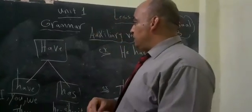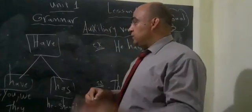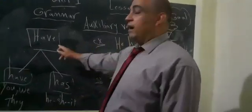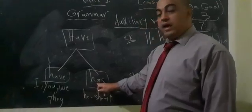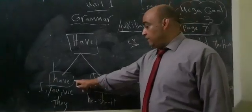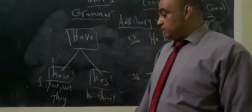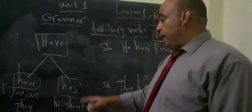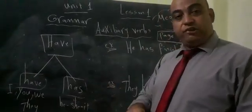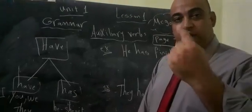Today, I will speak about Part 2, Auxiliary Verbs: have and has. 'Have' goes with plural subjects: I, you, we, they. 'Has' goes with singular subjects: he, she, it.